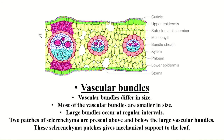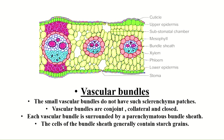The smaller vascular bundles do not have sclerenchyma patches. The vascular bundles are conjoint, collateral, and closed. Conjoint means xylem and phloem are at the same radius — the pink-colored cells are xylem cells and the blue-colored cells are phloem cells. Collateral means that even though they occur at the same radius, the phloem occurs a little bit outward. Closed means the vascular bundle does not contain cambium cells, which are responsible for cell division.